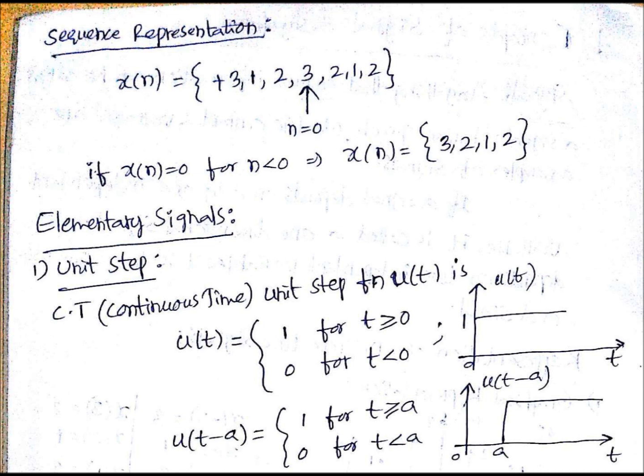If there is no arrow symbol, the first number will be of 0th time. That's what I mentioned here: if x(n) equals 0 for n less than 0, that means there are no negative time steps - the n time step is starting from 0.